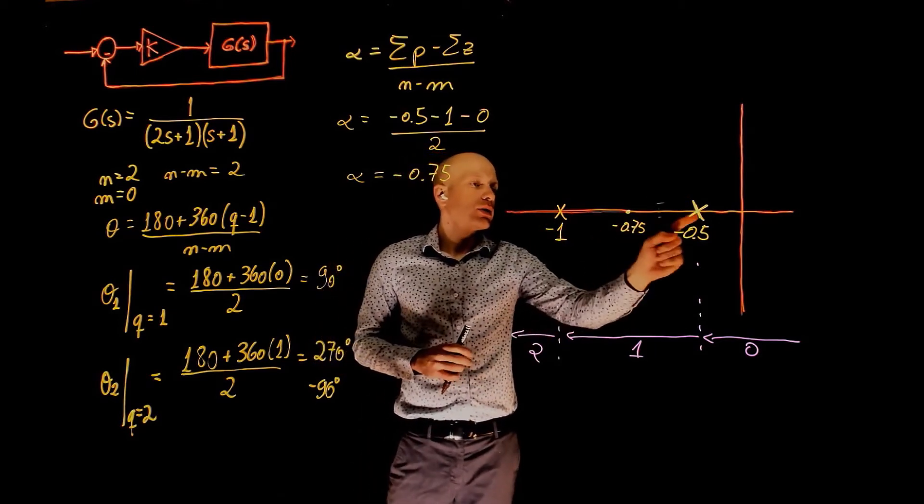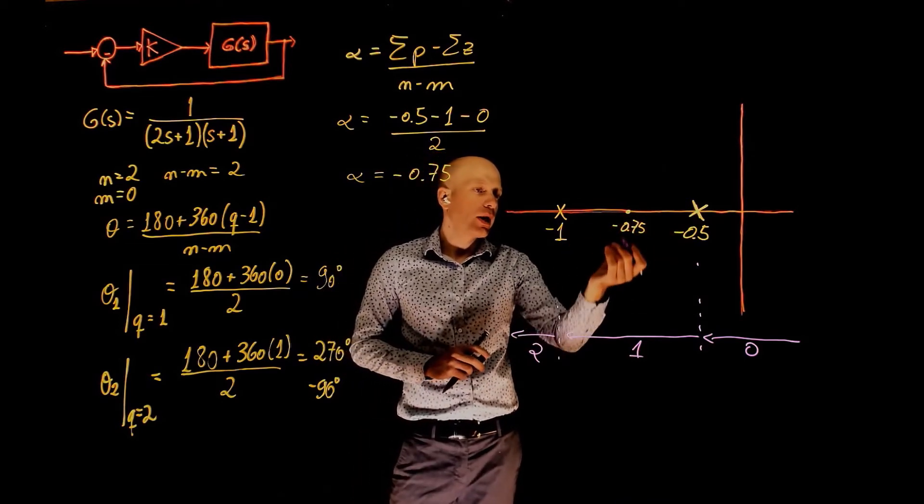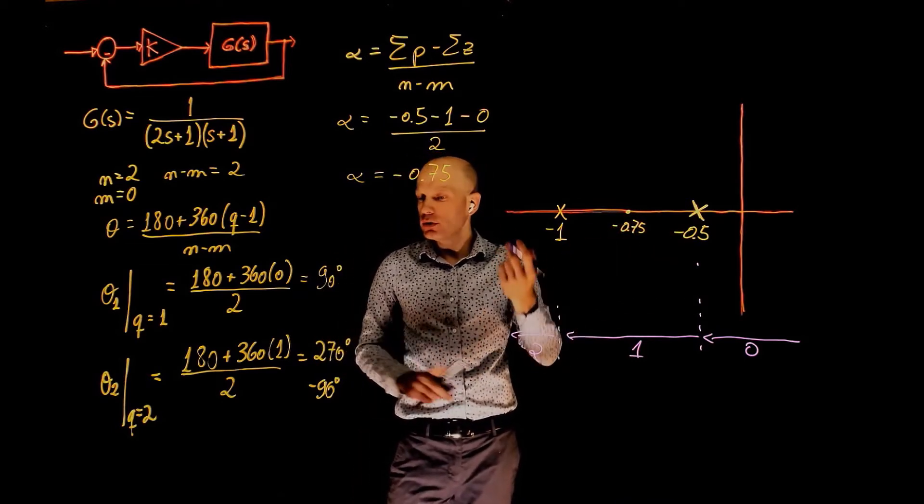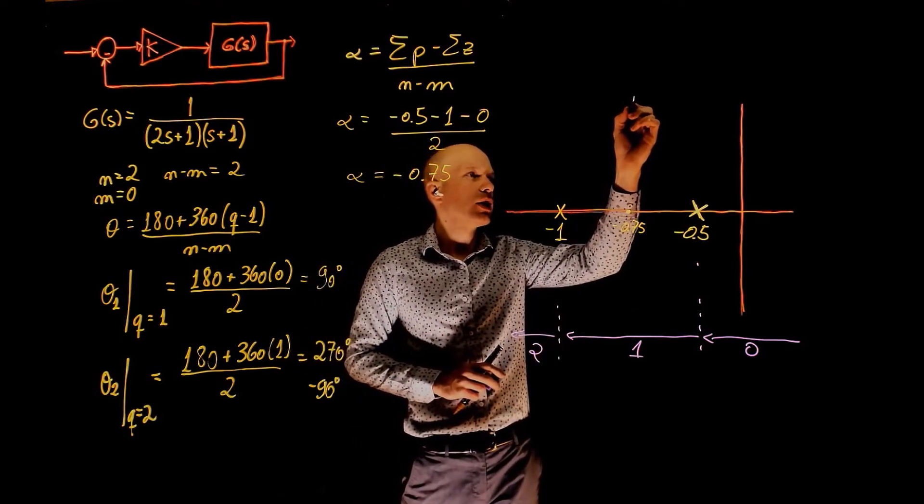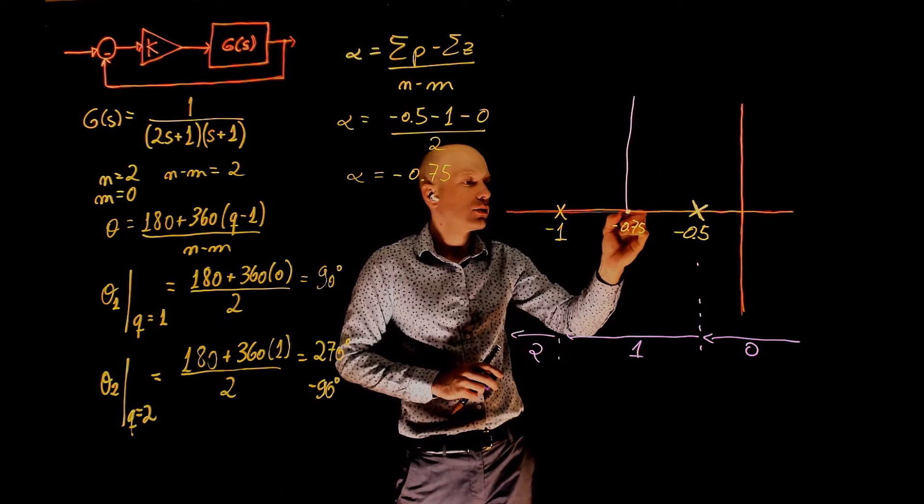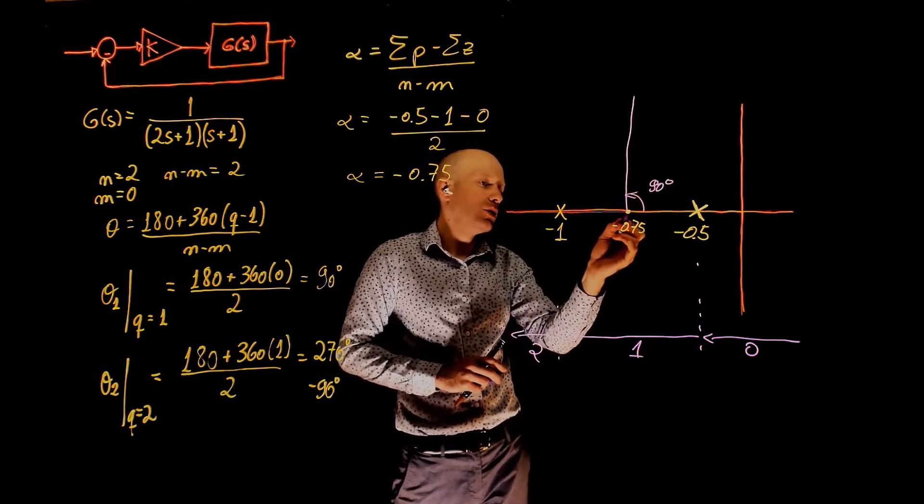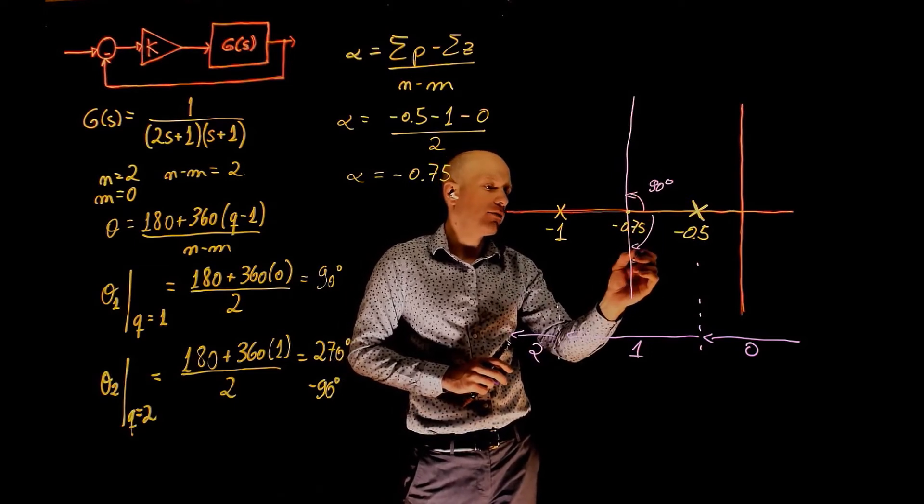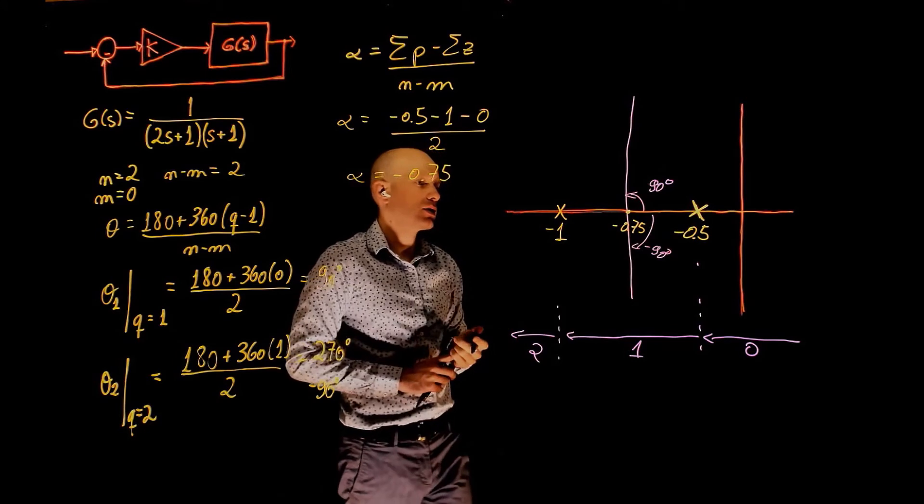Now, we know that the root locus exists between these two. It will break away from the real axis at 0.75 and it will go to infinity following these two asymptotes. So here is one of the asymptotes at 90 degrees.